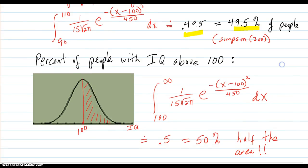And then what about the percent of people with IQ above 100? Well first, here's 100. It's a symmetric curve. So of course, since the area all adds up to 100%, half of it's going to add up to 50%.